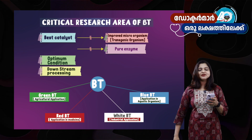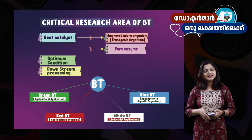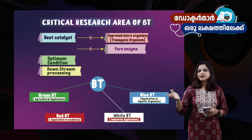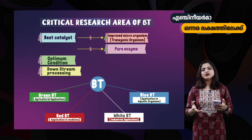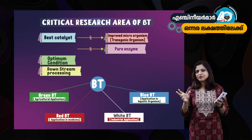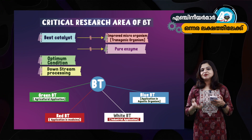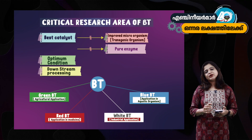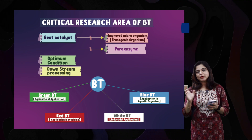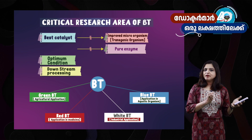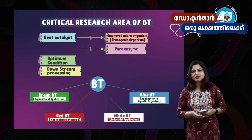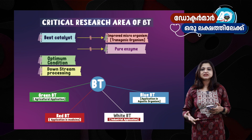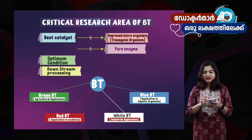We have three critical research areas of biotechnology. That is the best catalyst. We have a normal optimum condition. Then we have downstream processing — that is important. That is why we have Agriculture Biotechnology, Medical Biotechnology, Industrial Biotechnology, and Aquatic Biotechnology. There is a division of biotechnology.